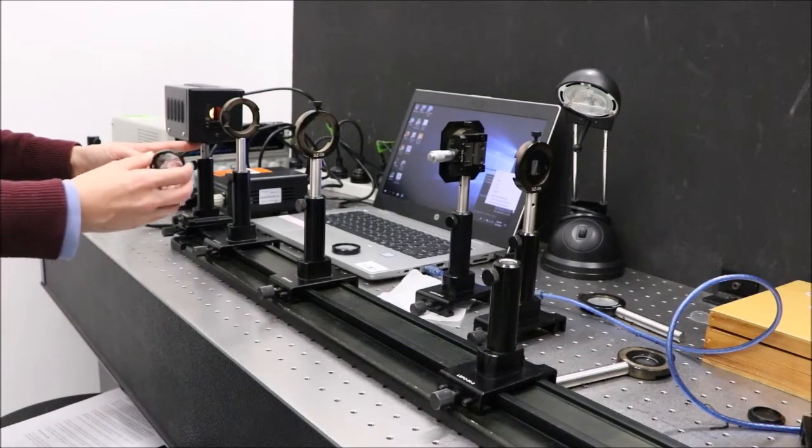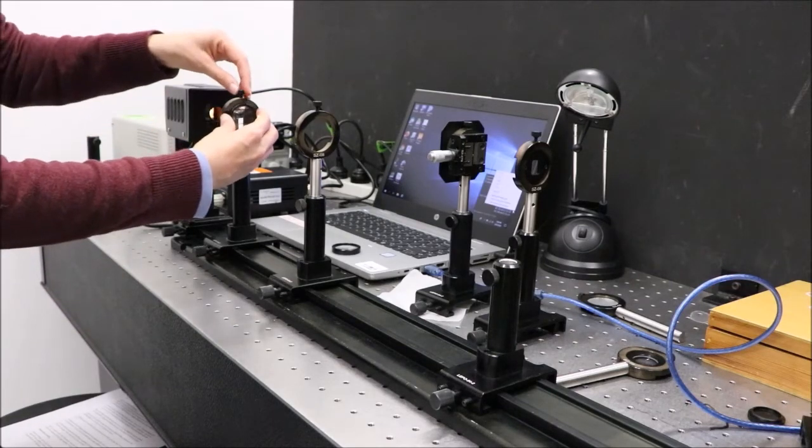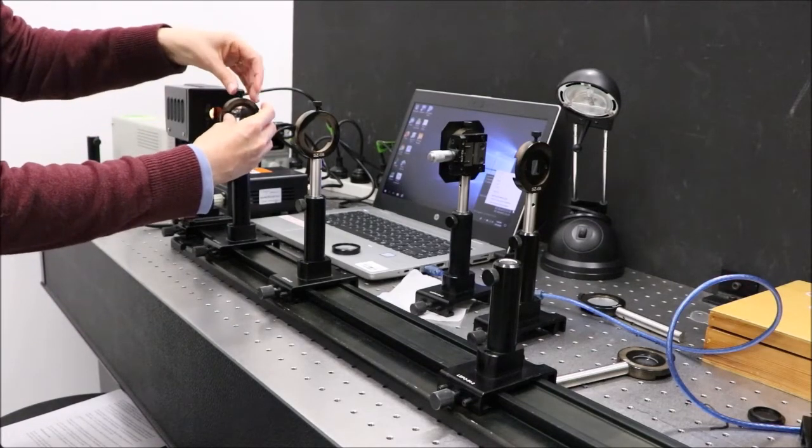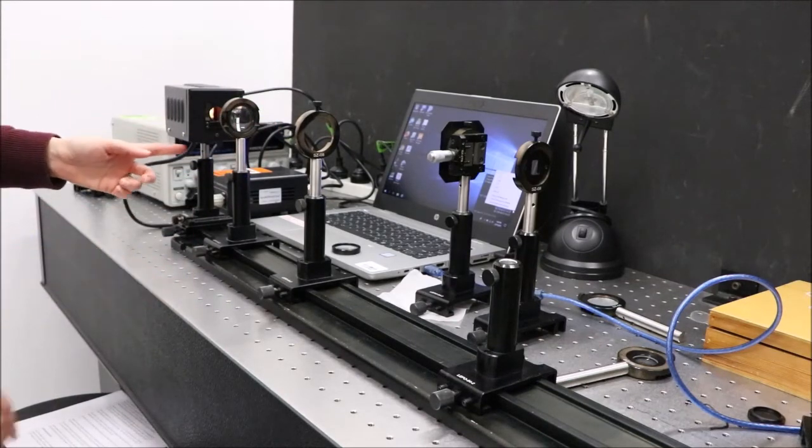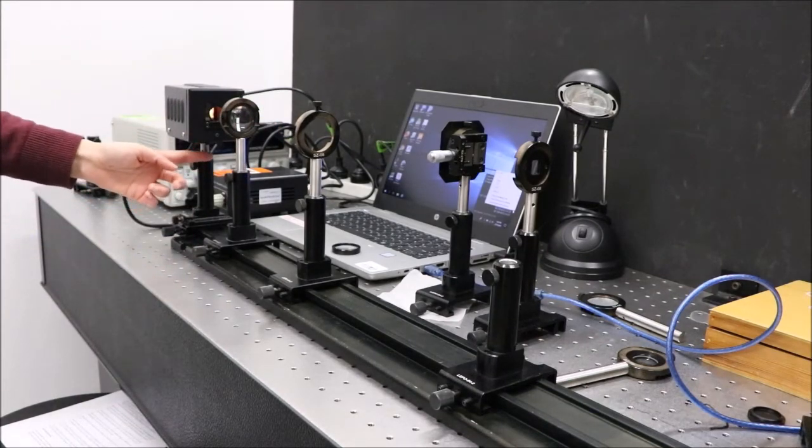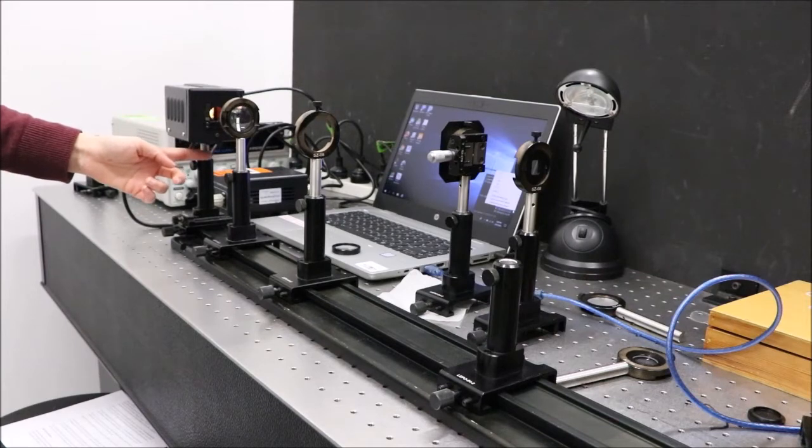We're going to put the collector lens in and make it about 10cm from the source. The source is located just in front of the post.